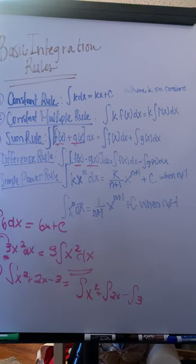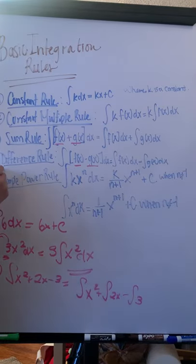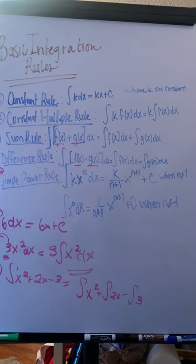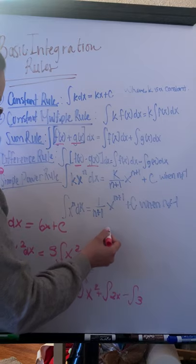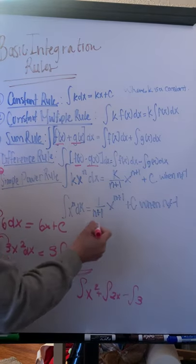Now, the last thing is the simple power rule. This is what we've been discovering, thinking backwards from the simple derivative rule. Let's work with 3x squared.